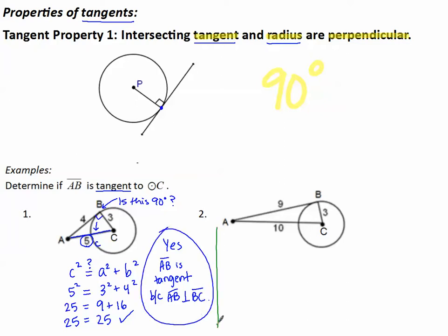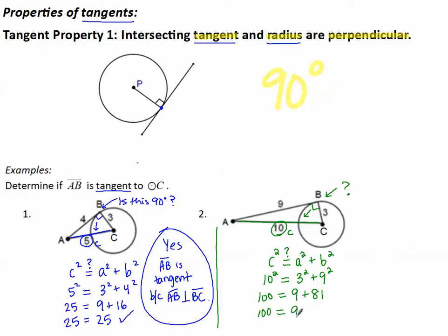How about the second one? Maybe you can try that on your own — pause the video, come back and see how you did. So if this is going to be tangent, it should be perpendicular to the radius. How do we figure out if this is a right triangle? C squared maybe equals A squared plus B squared. The biggest side is our C: 10 squared maybe equals 3 squared plus 9 squared. 100 equals 9 plus 81, so 100 equals 90 — that doesn't equal 90. So no, AB is not tangent to this circle, because AB is not perpendicular to BC.